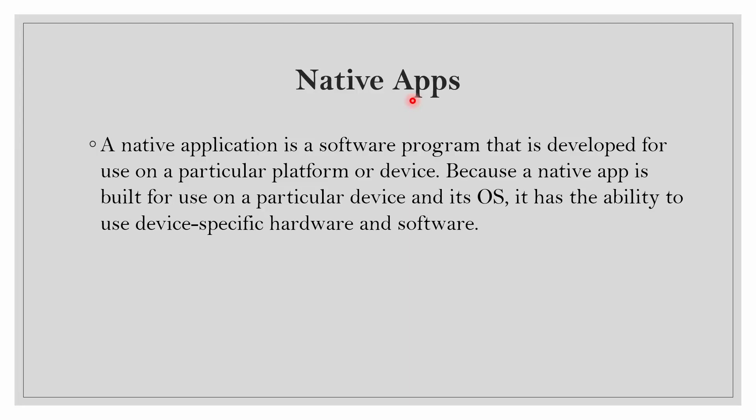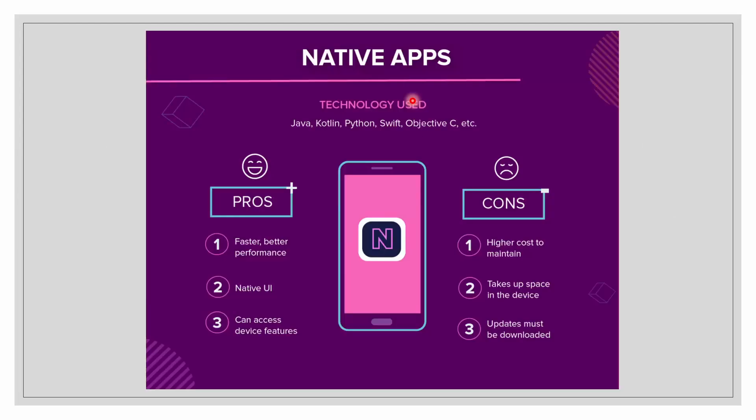Since the native app is built only for Android, it has the ability to use the specific hardware and software of that Android device. You cannot mix and match — you cannot use a BlackBerry app on an Android phone or use an iOS app on a Windows phone. Native apps are coded using programming languages such as Java, Kotlin, Python, Swift, Objective-C, C++, and React.